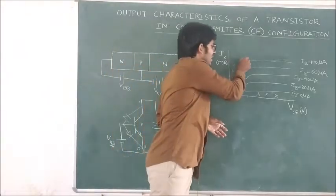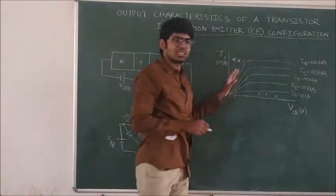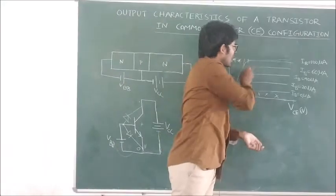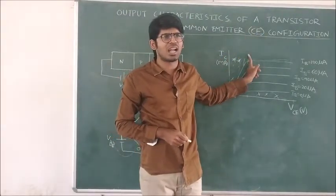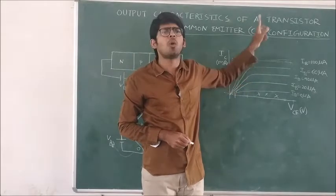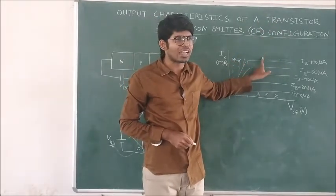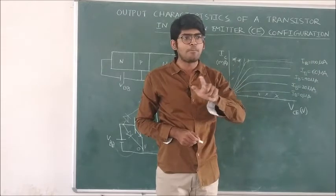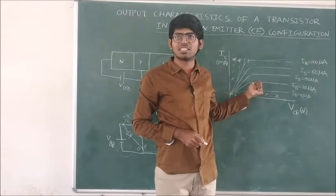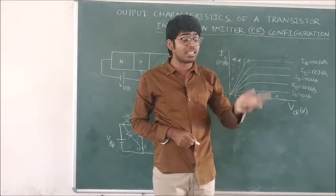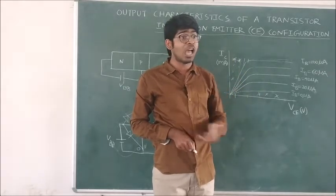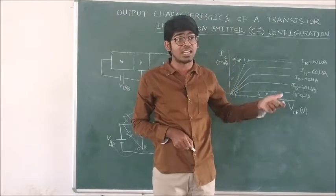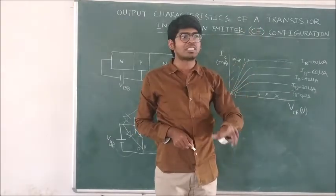The region with the steep rise — where VCE is small — is called the saturation region. The region where the collector current remains almost constant, even though we increment the voltage, is called the active region. So in the active region, even though we increment the voltage, the current is almost constant.